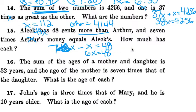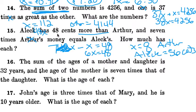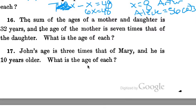Divide both sides by 6, so x is 8, and that's how much Arthur has. And Alec is 8 times 7, which is 56 cents. And you can always go back and check: 56 is 48 cents more than 8, yes it is. And it's also 7 times as much. So you got your double check there, and you're good.